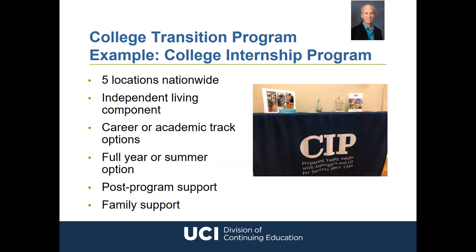Another example is CIP — the College Internship Program — which has locations nationwide from Massachusetts to California, with both summer programs and full-year programs. Many students there are on the spectrum, but by no means all. Students typically live in apartments near the program, learning the skills of living with a roommate, cooking, and planning their day. If on the academic track, this will be located near colleges where students can take courses, possibly community college or a private college. There's support after the program ends, and parents and family are kept in the loop.